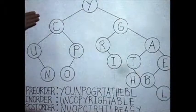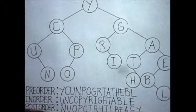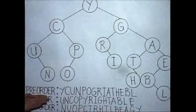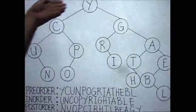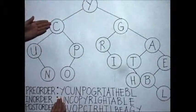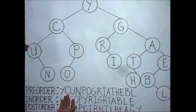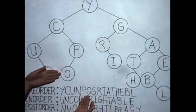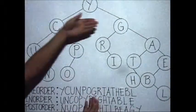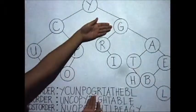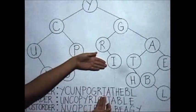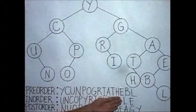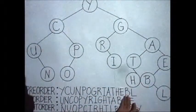Here's an example. In this binary tree, we are going to find the pre-order, in-order, and post-order traversals. For the pre-order traversal, the order is root node, left child, right child. We first visit the root node, which is the letter Y. Then, after visiting the root, we visit the nodes in the left sub-tree, which is letter C, then the left child letter U, next the right child letter N. Then go to node letter P, and next to the left child letter O. After visiting the nodes in the left sub-tree, we go to the nodes in the right sub-tree, which is letter G. We visit the left child letter R, next the right child letter I, then node letter A. We go to the left child letter T, then to the right child letter H. Then go to node letter E, next to the left child B, and lastly to the right child letter L.